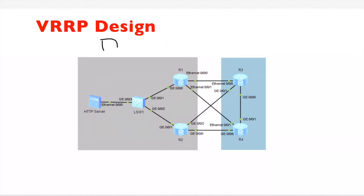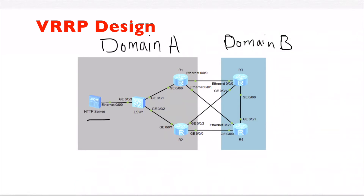This is domain A. We have another domain — domain B — that wants to get routed to the HTTP server. Domain B has R3 and R4 routers. Domain A and domain B are different domains and they want to provide redundancy to each other.